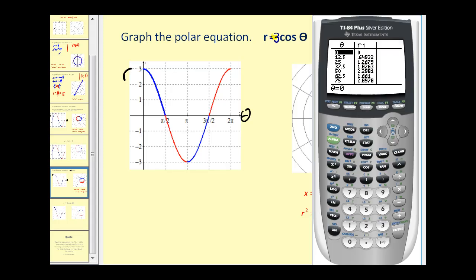If we wanted to verify this on the calculator, we can. Y equals three cosine theta now. Graph, you can see there it is.